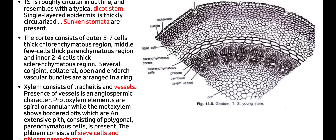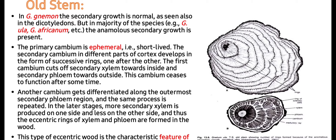Protoxylem elements are spiral or annular, while metaxylem shows bordered pits consisting of polygonal parenchymatous cells. Phloem consists of sieve tubes and phloem parenchyma. In the older stem, secondary growth occurs. In Gnetum gnemon, secondary growth is normal as also seen in dicots, but in the majority of species like Gnetum ula and Gnetum africanum, anomalous secondary growth is present. This is because the primary cambium is ephemeral — meaning short-lived. Secondary cambium in different parts of the cortex develops in the form of successive rings.